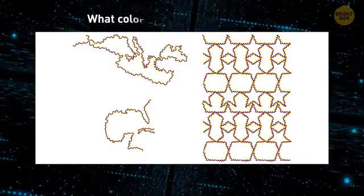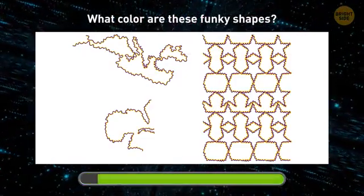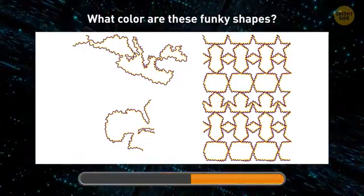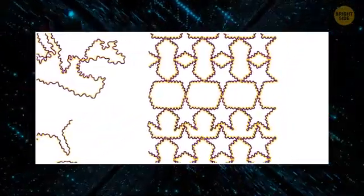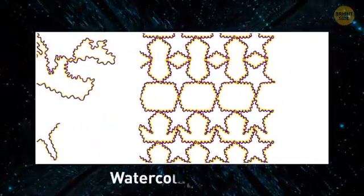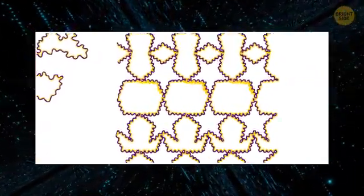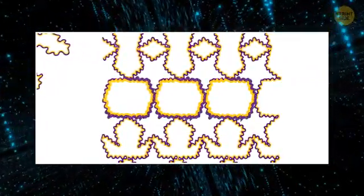What about this one? What colors are these funky shapes? Just like in the previous illusion, they're all empty and white. That's a watercolor illusion. Your brain fills in the shape that has a bright line and a darker line at its borders with a brighter color.